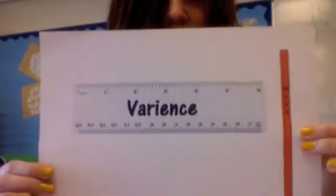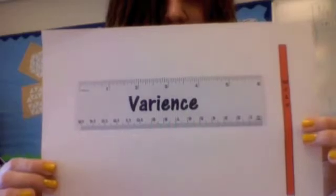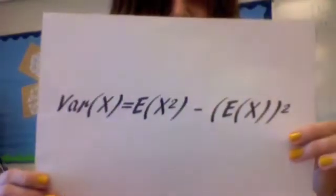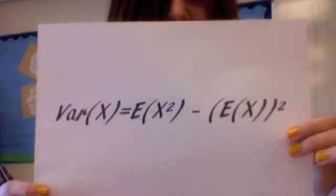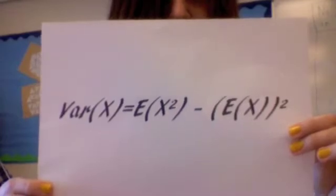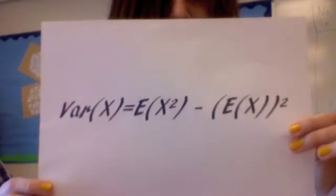The variance is used to find the distance from the mean. Do you work it out? Listen to what I'm about to sing. Variance of x equals E(x squared) minus E(x), all squared.